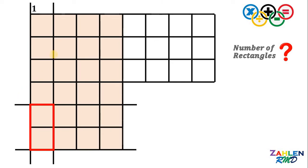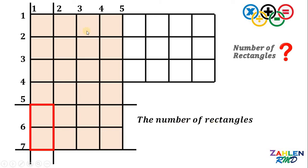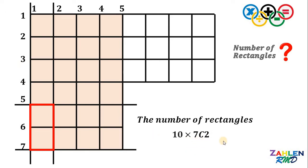In the first colored grid, we have five vertical lines and seven horizontal lines. We need to choose two of each. So the total number of rectangles equals 5 choose 2 times 7 choose 2. Five choose two is ten, and seven choose two is twenty-one. Therefore, the total number of rectangles in this colored grid is ten times twenty-one, which equals 210 rectangles.